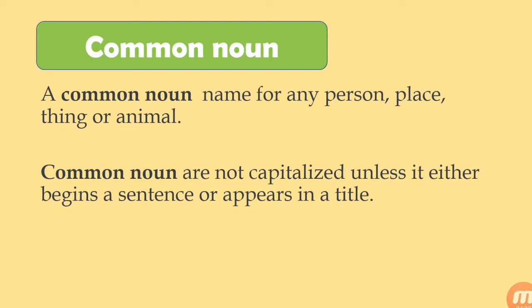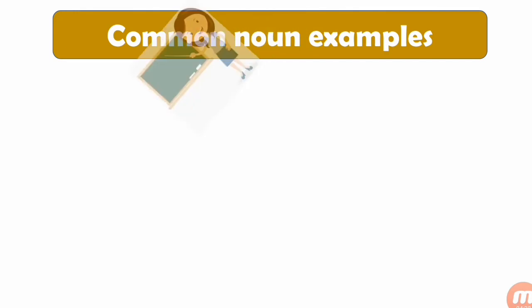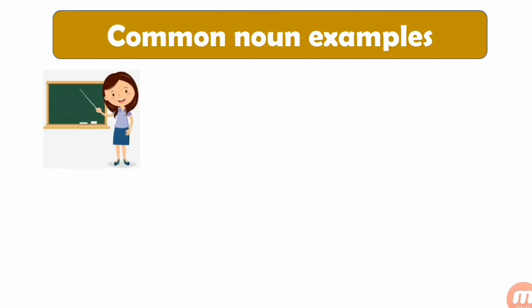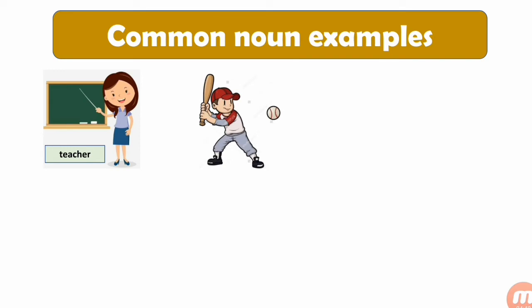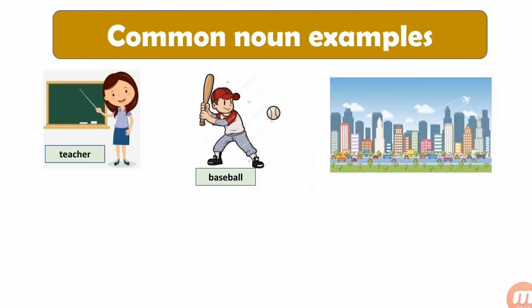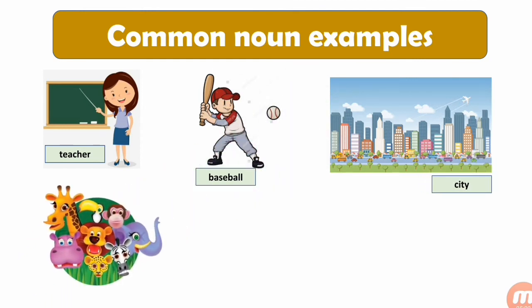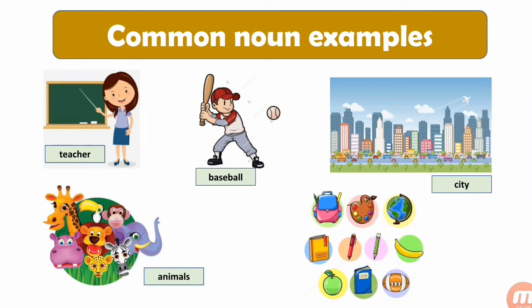For example, you can see the green-colored common noun on screen — the 'C' is capitalized because it starts a sentence. Now let's have some common noun examples from pictures. Can you identify the first picture? Correct — it's a teacher. The second picture shows a boy playing baseball. The third picture is a city. The next picture shows a group of animals. And the last one shows a group of things or objects — we can see different things: apple, globe, colors, and more.